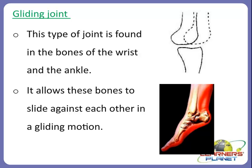You will be amazed to know that each bone in our body has a name. The smallest bone in our body is in the ear — it is called the stirrup bone, spelled S-T-I-R-R-U-P. It is as small as a rice grain.